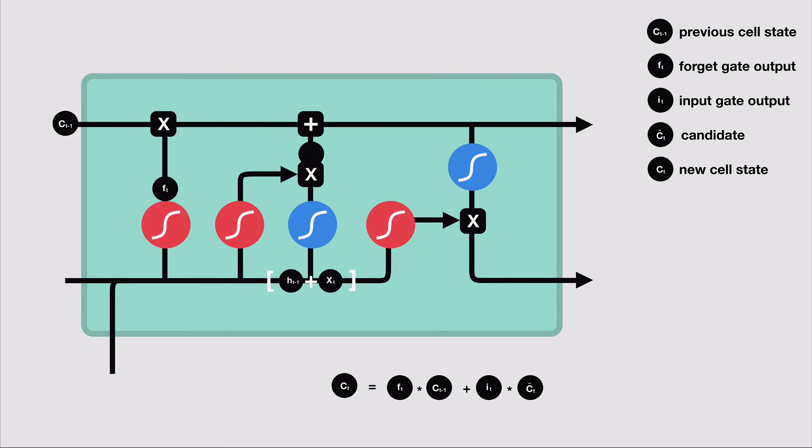Now we should have enough information to calculate the cell state. First, the cell state gets multiplied by the forget vector. This has the possibility of dropping values in the cell state if it gets multiplied by values near zero. Then we take the output from the input gate and do a pointwise addition which updates the cell state to new values. This gives us our new cell state.